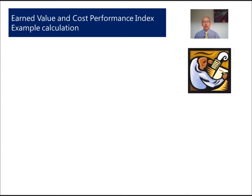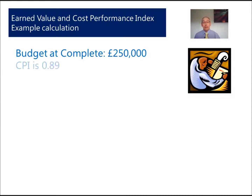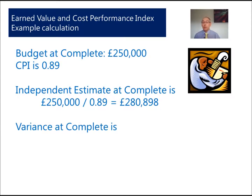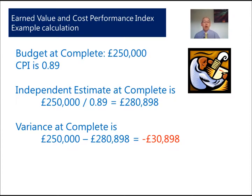In a worked example: assume our budget at complete is two hundred and fifty thousand pounds and we have a CPI of 0.89. The independent estimate at complete is two hundred and fifty thousand divided by 0.89, which gives us two hundred and eighty thousand, eight hundred and ninety-eight pounds. The variance at complete is two hundred and fifty thousand minus two hundred and eighty thousand, eight hundred and ninety-eight pounds — an overspend of thirty thousand, eight hundred and ninety-eight pounds. This is not good.